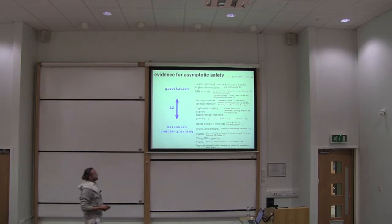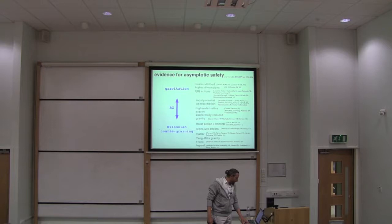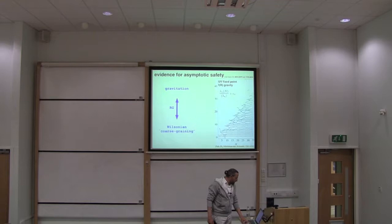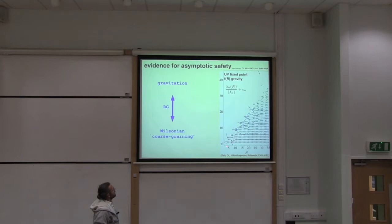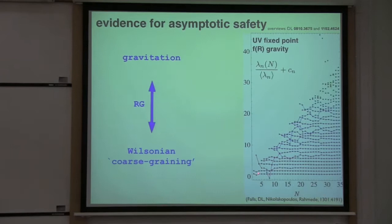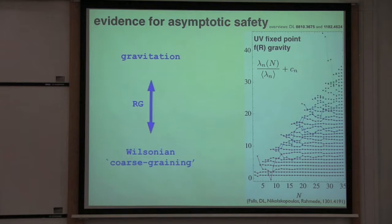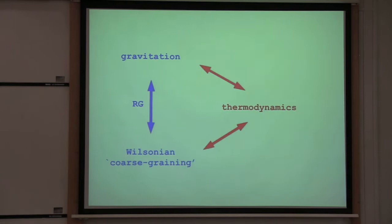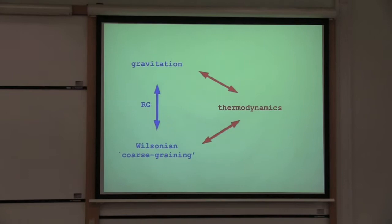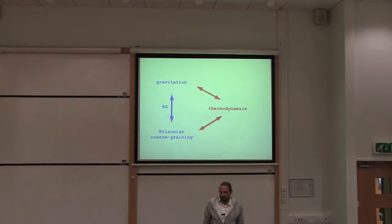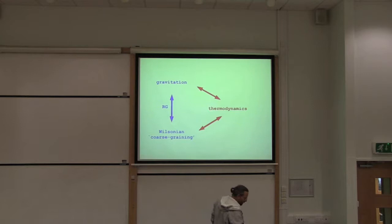So there is a very intimate link between gravitation and an underlying Wilsonian path integral representation. Perhaps the most advanced study in four dimensions for such a fixed point search is shown here — an action which is a polynomial in the Ricci scalar for which a fixed point has been searched up to order 35 powers of the Ricci scalar, and a very stable fixed point has been identified in this highly intricate system. There's quite some evidence that an improved path integral may actually underlie a theory of gravity, and thus could help clarify aspects of gravitational thermodynamics and black hole physics.